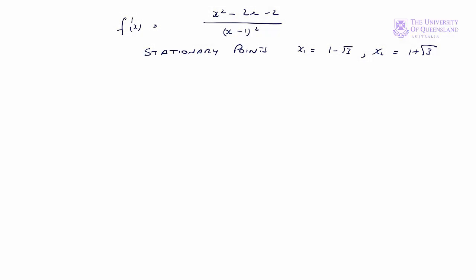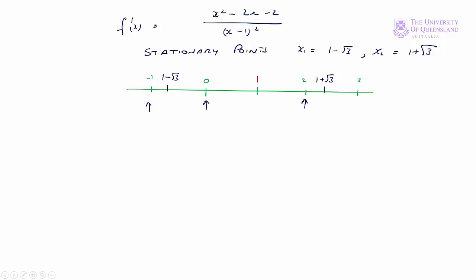We have our first derivative and the stationary points. Let's draw a number line including those stationary points. We want to find the sign of the first derivative — that will depend on the numerator. So we'll find the sign of f'(x) at x equals minus 1, at 0, at 2, and at 3.